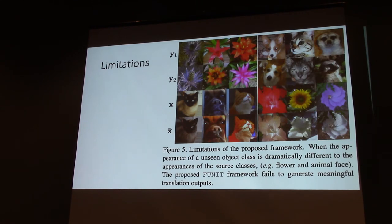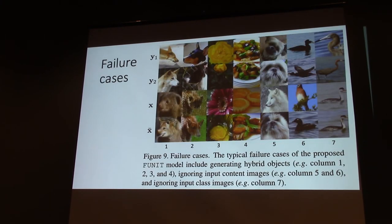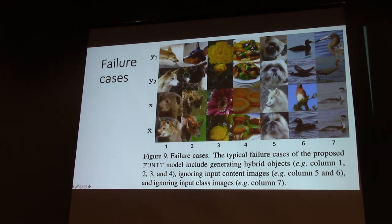There are some limitations. For an animal translation model, if you provide a flower image at test time, the model will not be able to translate the animal to a flower. And if you provide a flower image when the content image is an animal, it will not do the job. There are also failure cases: the model may mix two animal species together to create a new species, sometimes ignore the input image and just copy the class image, or ignore the class images and just copy the input.